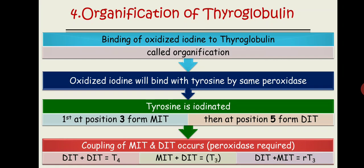Reverse T3 (rT3) does not have the metabolic-increasing action of T3. When we need to conserve calories — for example, in illness — the body decreases synthesis of T3 and T4 and increases reverse T3 synthesis instead. This condition is known as euthyroid sick syndrome, and it is mediated by the enzyme D3 (deiodinase type 3).